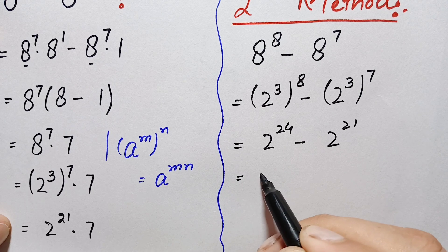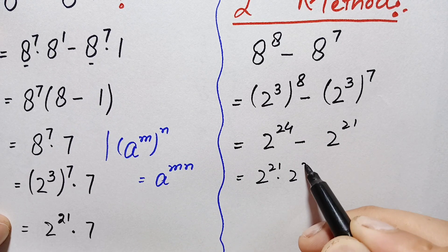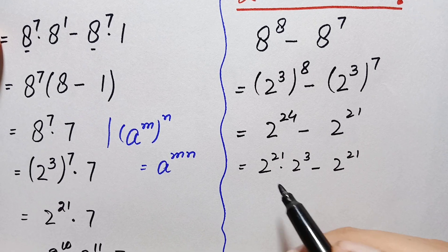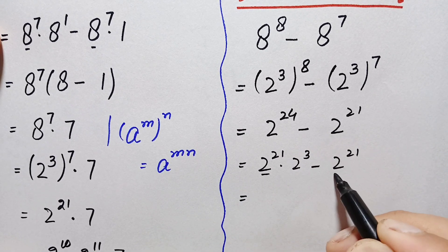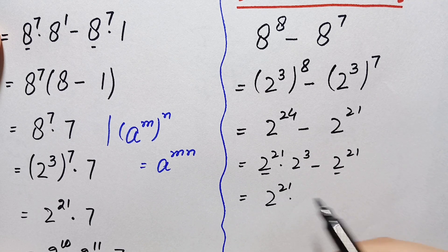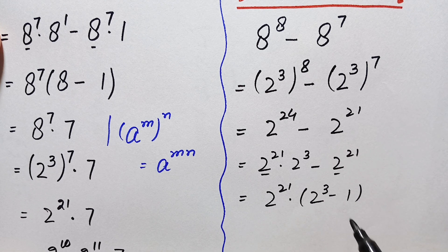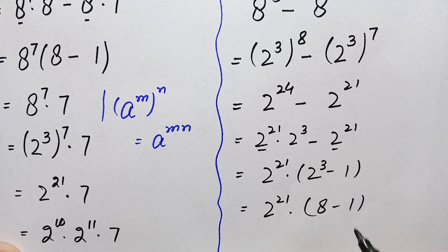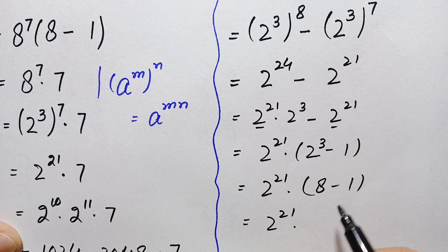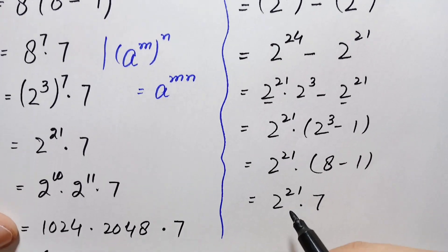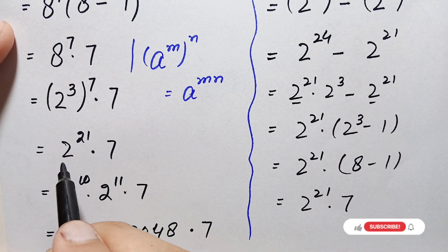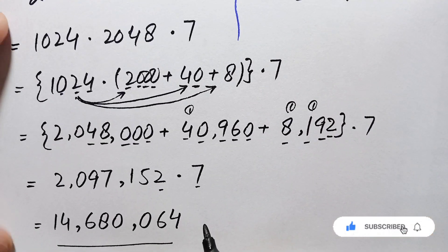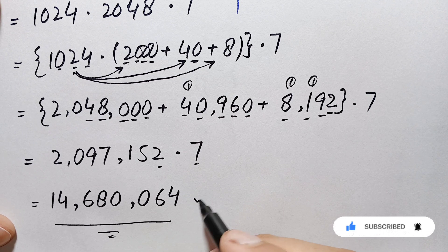We can write 2 raised to power 24 as 2 raised to power 21 times 2 raised to power 3, minus 2 raised to power 21. Since 2 raised to power 21 is common in both terms, we factor it out: 2 raised to power 21 times (2 cubed minus 1), which equals 2 raised to power 21 times (8 minus 1), giving us 2 raised to power 21 times 7. Solving this further gives the same answer: 14,680,064.